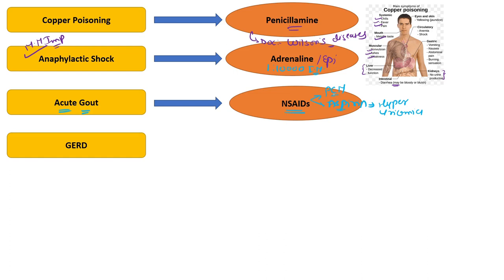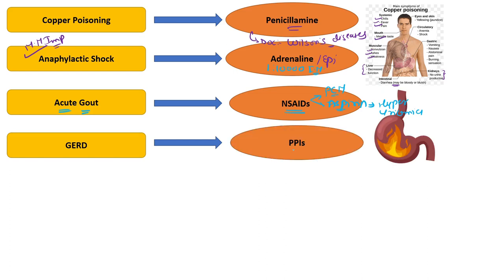GERD — gastroesophageal reflux disorder — the drug of choice is proton pump inhibitors (PPIs). Proton pump inhibitors are the most effective drugs for GERD. Remember, proton pump inhibitors are the most effective drugs in all GI conditions.